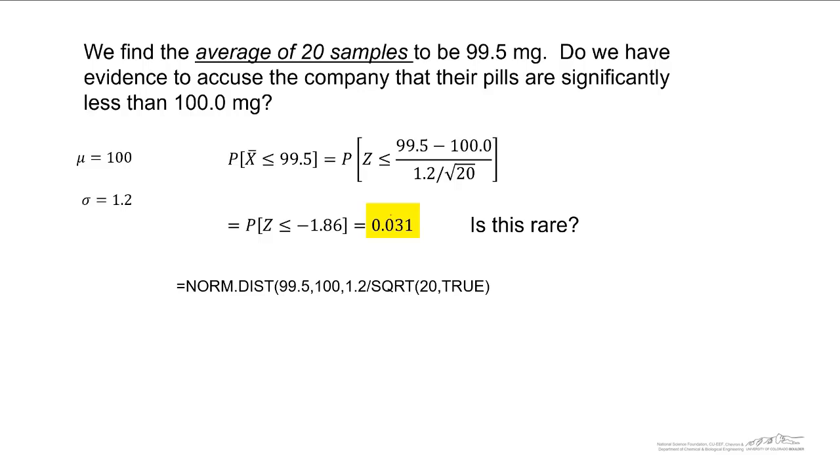So if we found an average of 20 samples to be 99.5, this is also known as a p-value, and you'll learn more about that later in the course. But this only occurs 3% of the time.